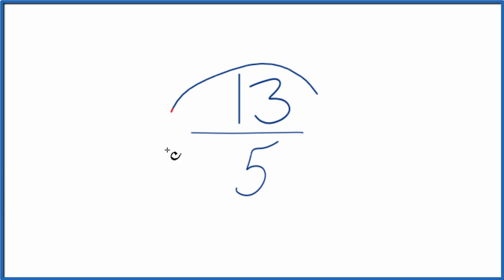Let's simplify the fraction 13 fifths, and here's how we do that. What we want to do is find another fraction that's equivalent to 13 over 5, has the same value, just that we've simplified or reduced it to lowest terms.